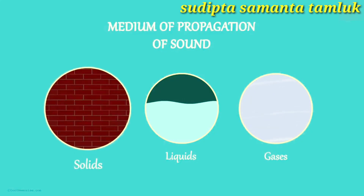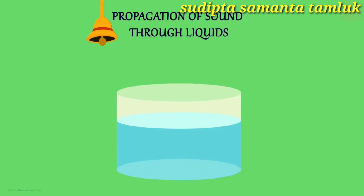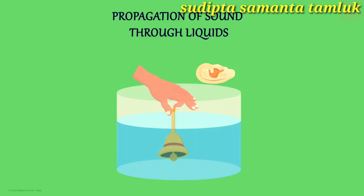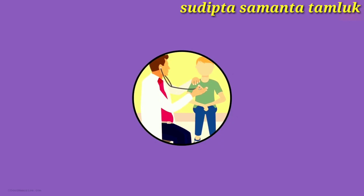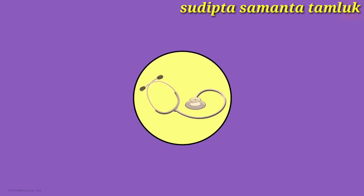Sound can also travel through solids and liquids. If we place a bell in water and keep one ear close to the surface of water while shaking the bell inside, you can hear it — here the medium of propagation is water. The doctor uses a stethoscope to check your heartbeat. The small disc-shaped diaphragm is placed against the chest, and the sound of your heartbeat travels through the tube to the earpieces. Here, the medium of propagation is a solid.